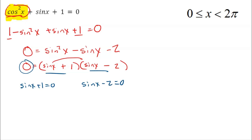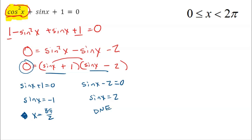I just have to solve each of these separately. Sine of x equals negative 1 — that happens at 3π/2. Over here, sine of x equals positive 2, and that's actually impossible. That does not exist because sine is never allowed to be more than 1 or less than negative 1. So sine of x can never be 2. This equation has one solution: x equals 3π/2.